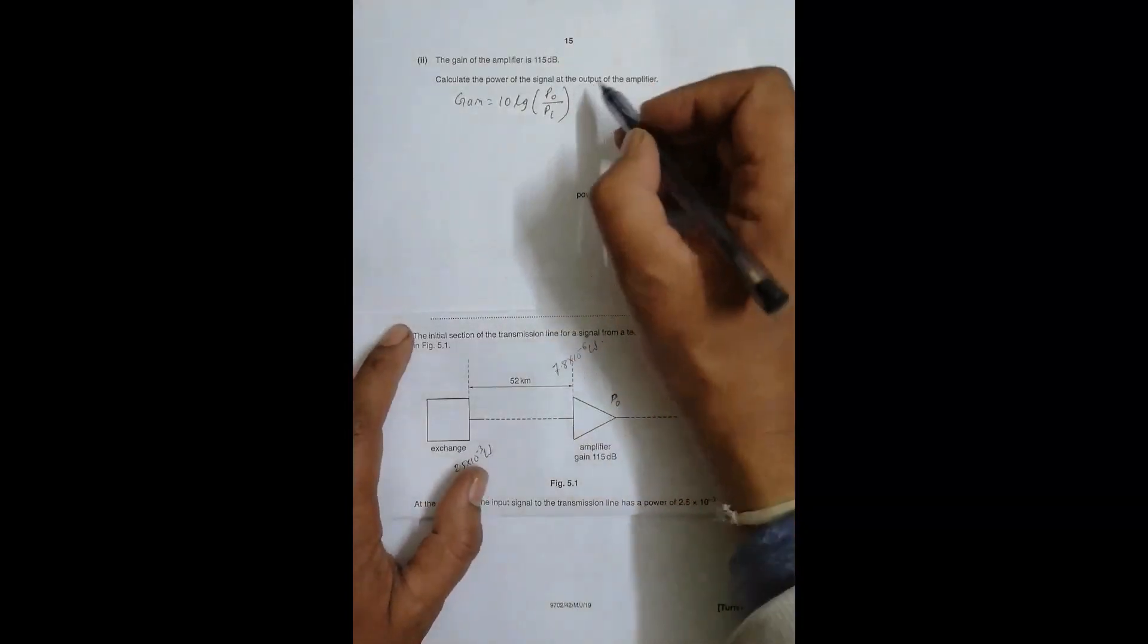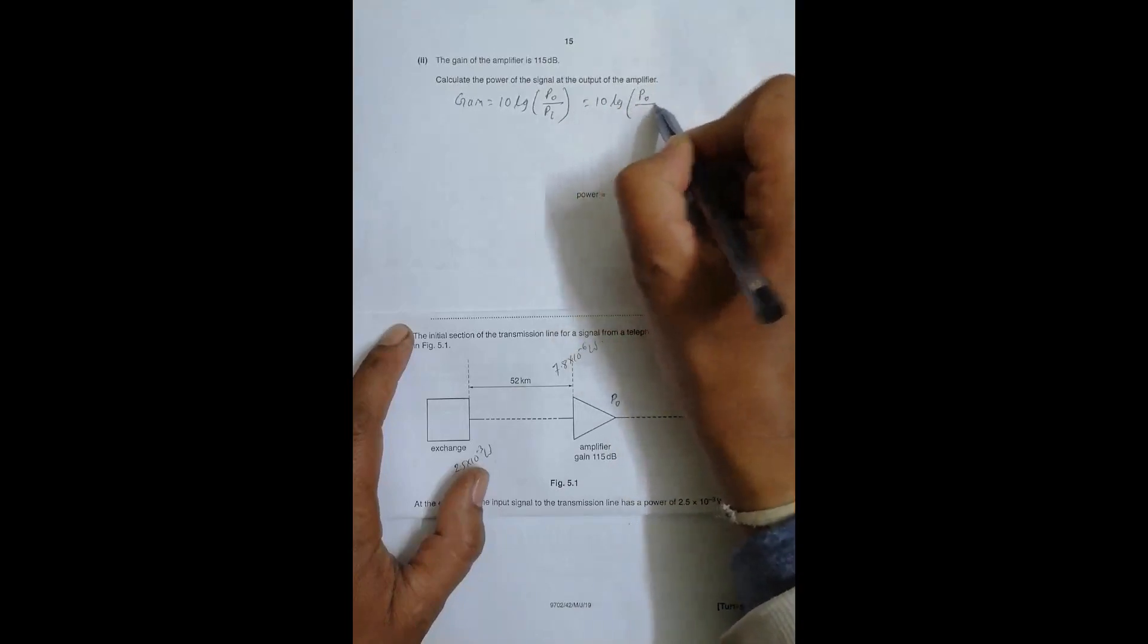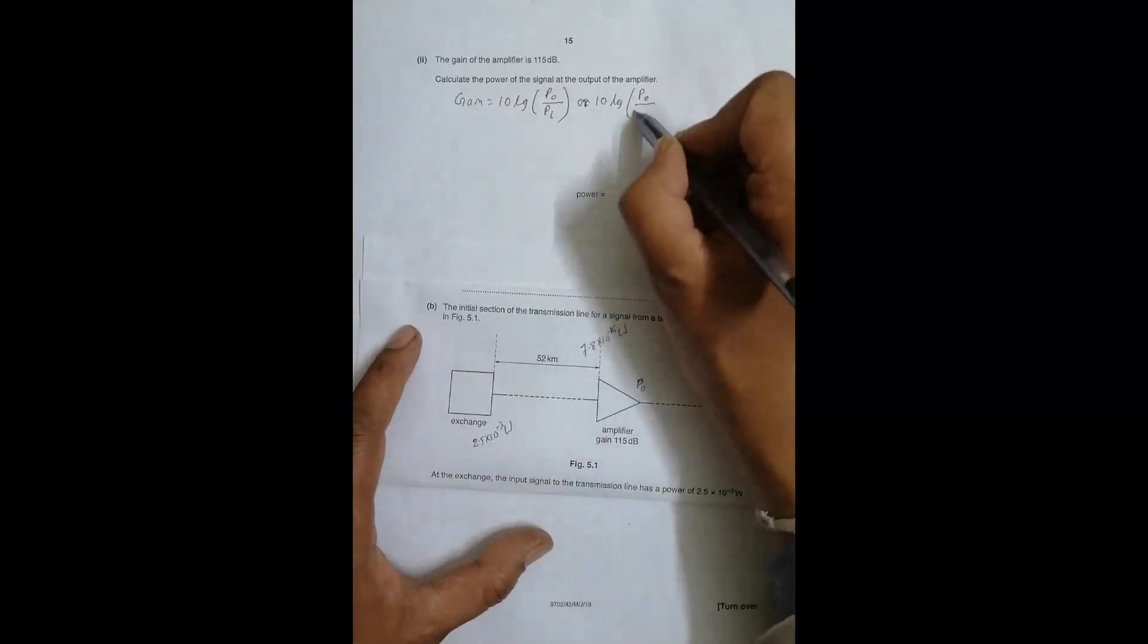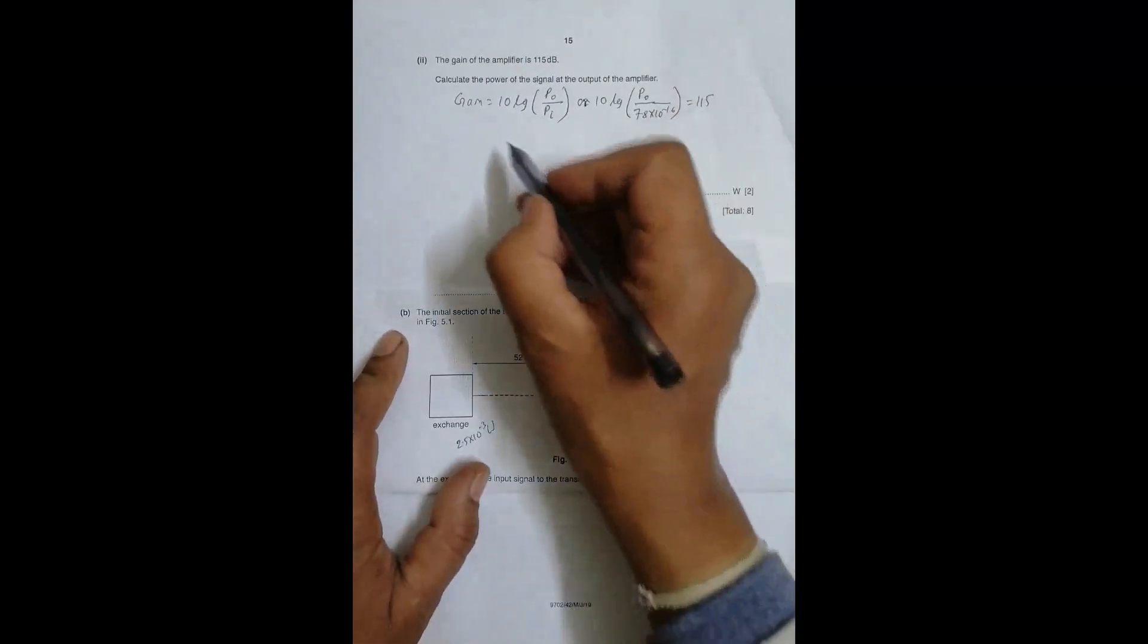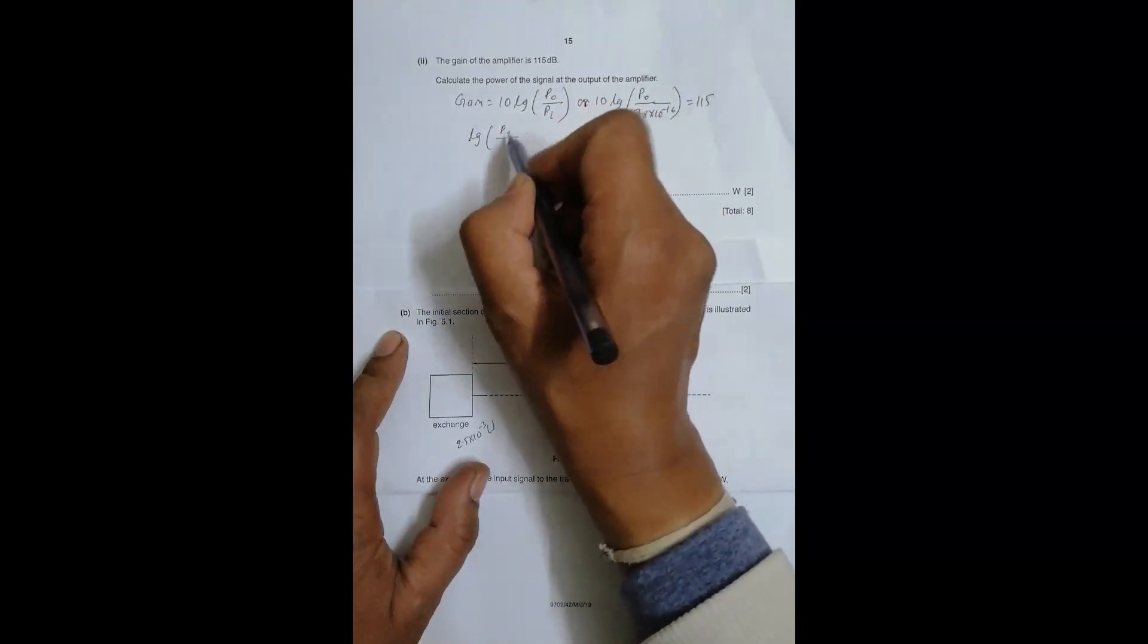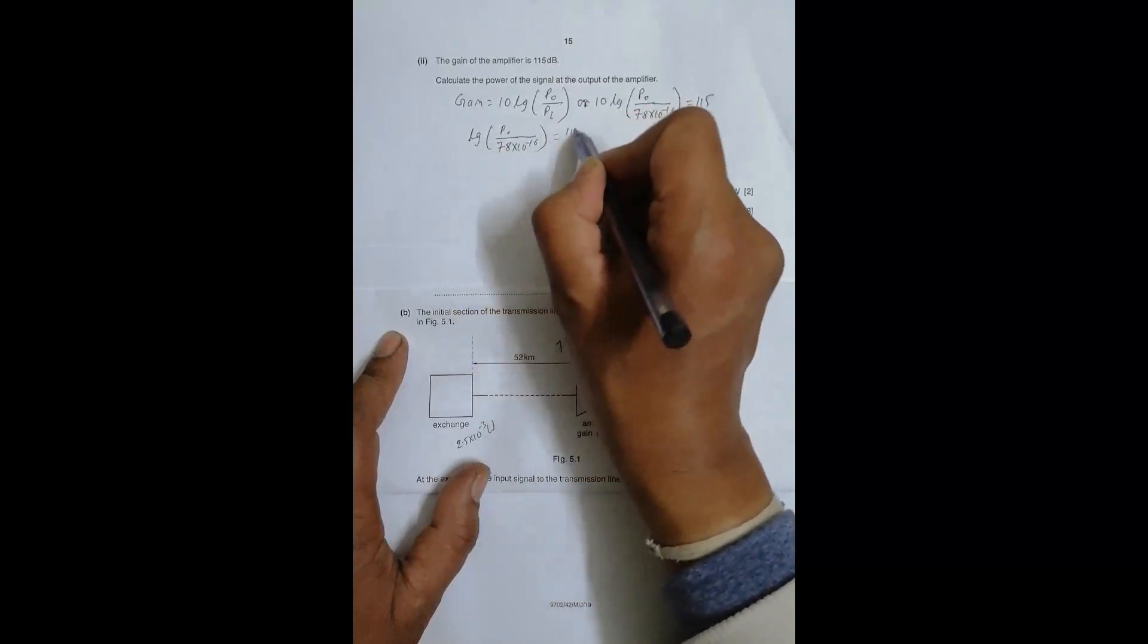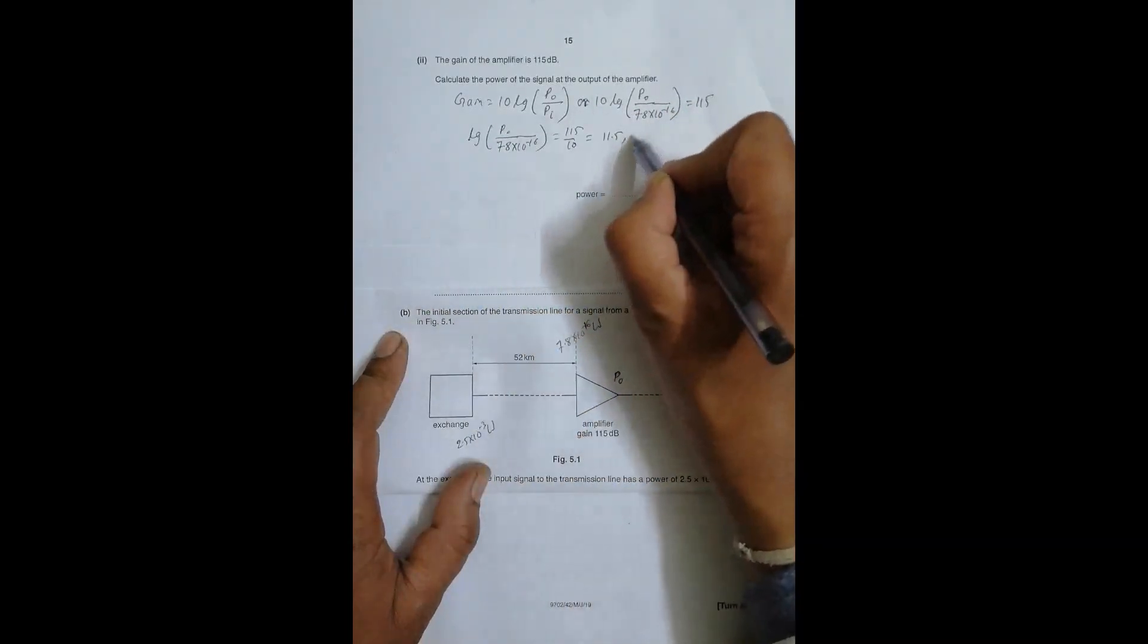So it is 10 log (P_output / P_input). Power output is to be found, and power input is 7.8 × 10^-6 watt. So 115 equals 10 log (P_0 / 7.8 × 10^-6), which gives us 11.5 equals log (P_0 / 7.8 × 10^-6). Therefore P_0 / (7.8 × 10^-6) equals 10^11.5.